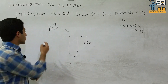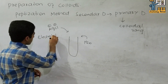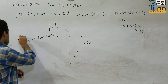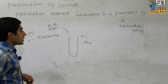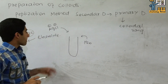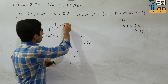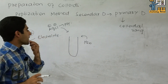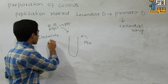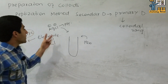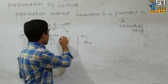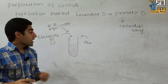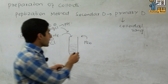In the third step we add a specific electrolyte. This electrolyte is chosen carefully — it shares a common ion with the precipitate. We then shake the test tube, and particles of colloidal range will be formed.